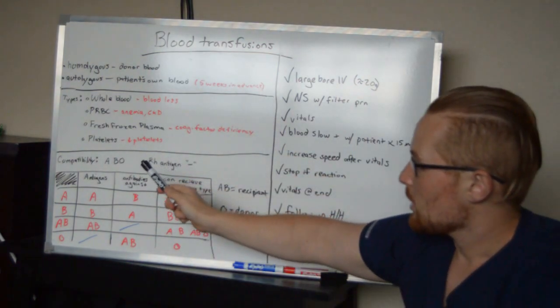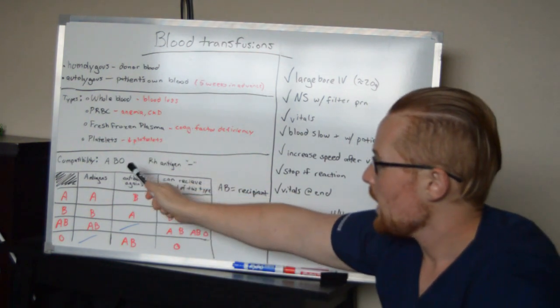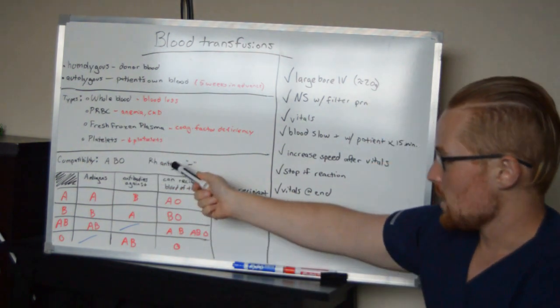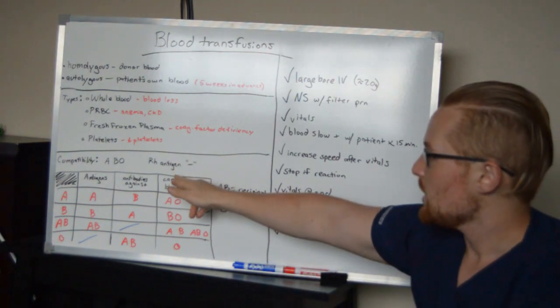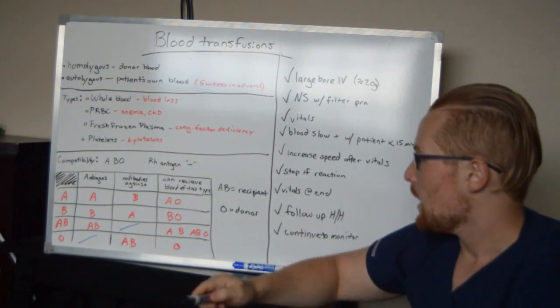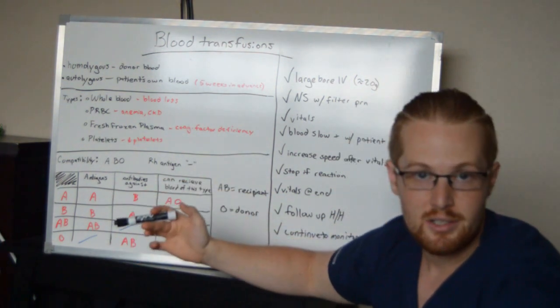When you're talking about blood, compatibility is very important. And so there's the typical ABO, and then there's the RH antigen. So when you see A positive or A negative, the positive and negative is the RH antigen. And so here's a quick chart, and you can see all kinds of different charts online.